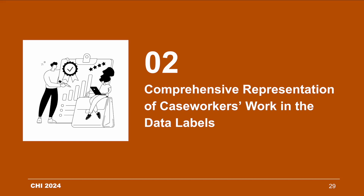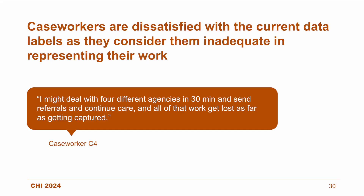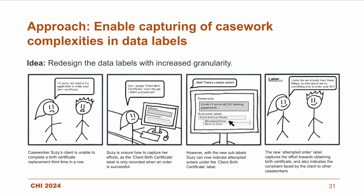In the second theme, we aim to enable comprehensive representation of caseworkers' work in the data labels. We identified that caseworkers are dissatisfied with current data labels as they consider them inadequate in representing their work. As one caseworker noted: 'I might deal with four different agencies in 30 minutes and send referrals and continue care — however, all of that work gets lost as far as getting captured.' To address this, we explored enabling capturing of casework complexities through redesigned data labels with increased granularity. For instance, caseworker Susie dealing with unsuccessful birth certificate orders for a client can capture her additional efforts using a new sub-label 'attempted orders' under the client birth certificate label, enabling effective capturing of caseworker efforts.